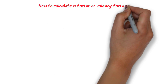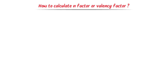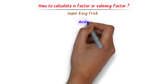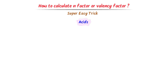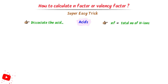How to calculate n-factor or valency factor? I will teach you a super easy trick to calculate n-factor or valency factor. Firstly, we will learn calculating n-factor of acids. In case of acids, we would just dissociate the acid. Then the n-factor of any acid is equal to the total number of hydrogen ions.